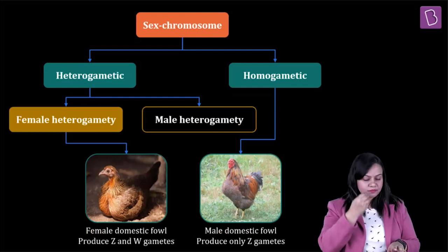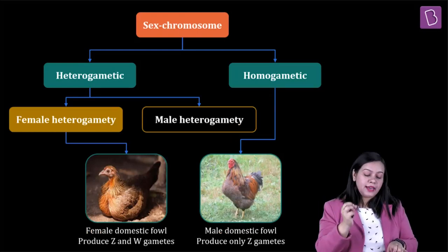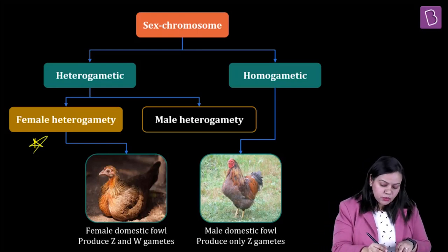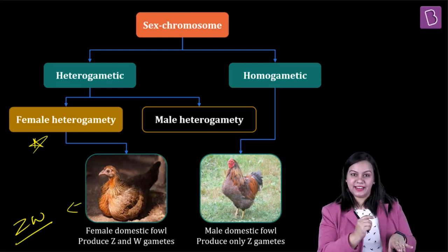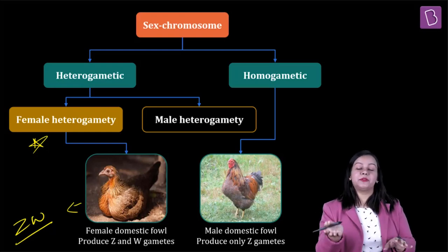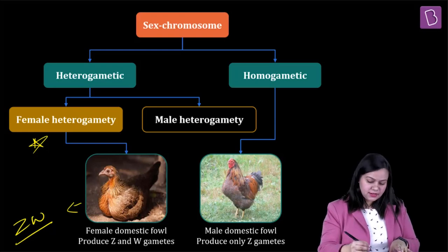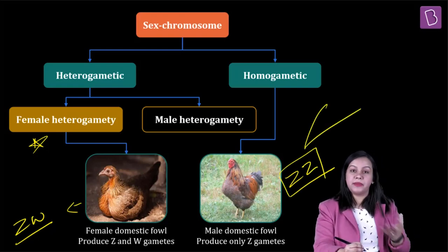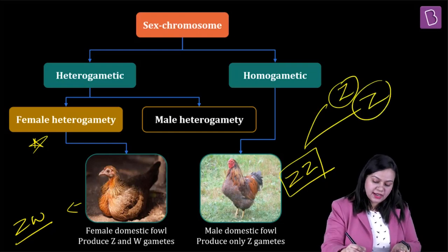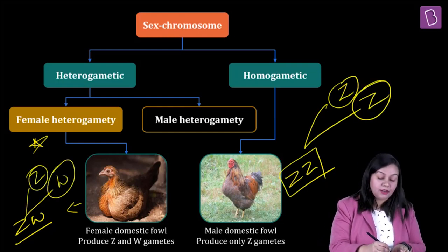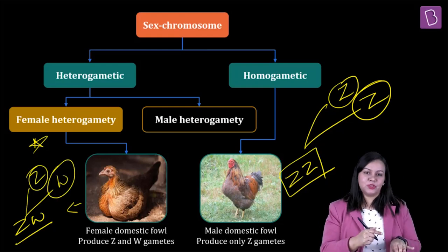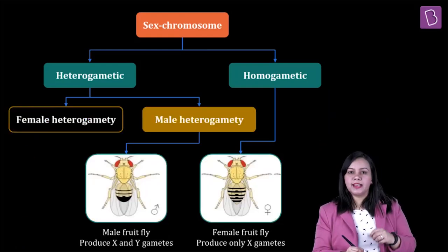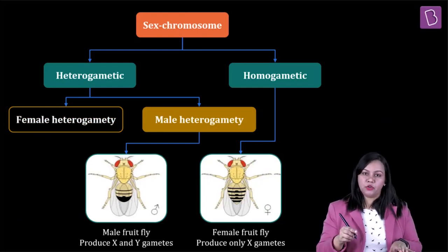Now let us go on to birds. In birds it shows female heterogamety, meaning females produce Z and W type of gametes — that is why statement 4 is incorrect, because sex determination depends on the egg, not the sperm. The male domestic fowl is ZZ type, producing only Z-type gametes. The female produces Z and W type gametes, so sex determination in birds is dependent upon the females, i.e., the eggs produced.